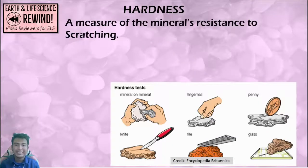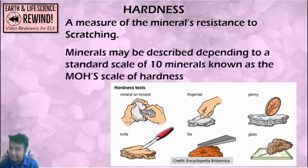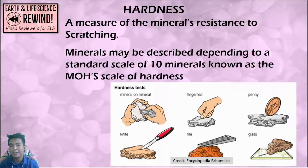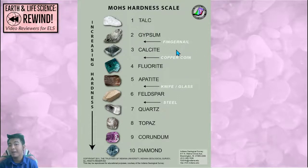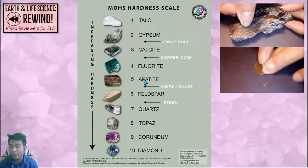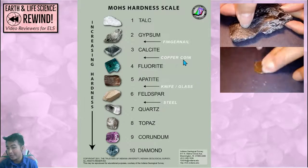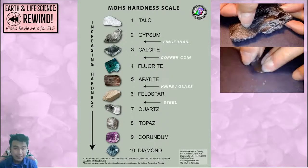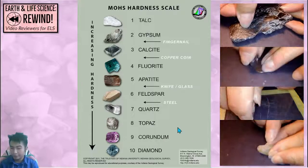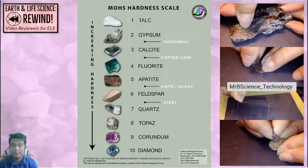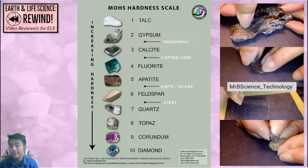Hardness as a property is the mineral's resistance to scratching — can it be scratched, and what materials can scratch it? Minerals are described according to the Mohs scale of hardness, a standard scale of 10 minerals. The higher the number, the harder and more resistant to scratching. Talc and gypsum (1 and 2) can be scratched by a fingernail. Fluorite and apatite (4 and 5) can scratch a copper point. Quartz can scratch glass, and corundum (9) can scratch topaz (8).